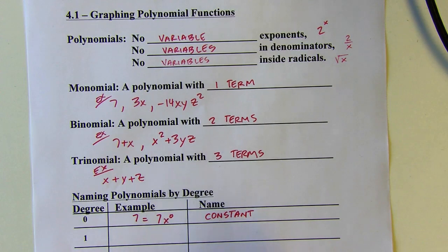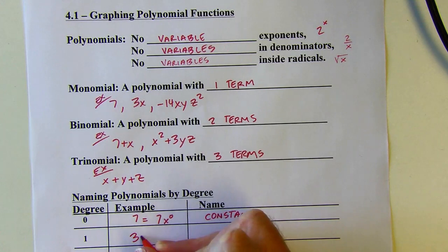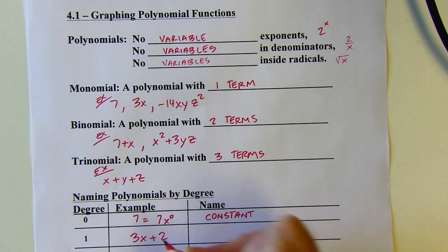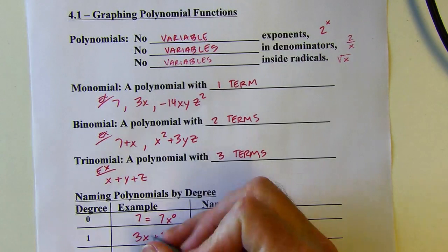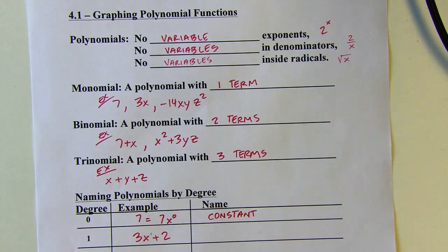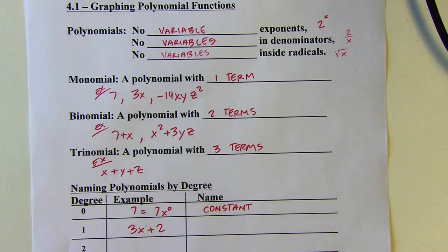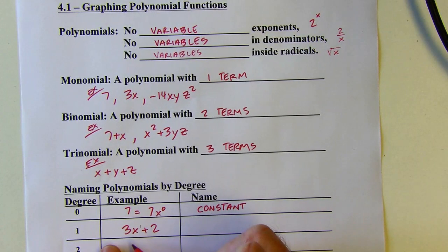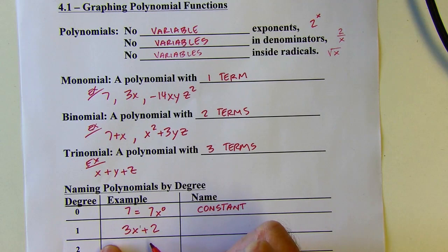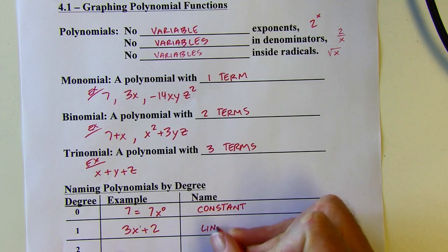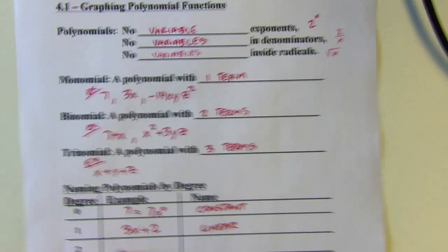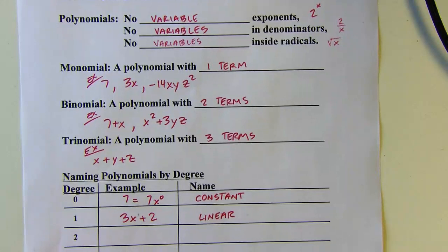A first degree polynomial might look something like this — there's an x to the first in there, so that makes it a first degree polynomial. If we graphed y equals 3x plus 2, it would be a straight line. So this is going to be a linear polynomial — a first degree polynomial is linear.